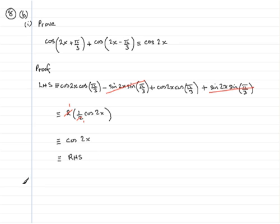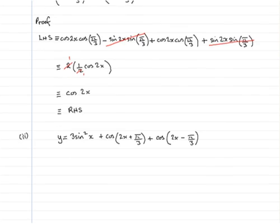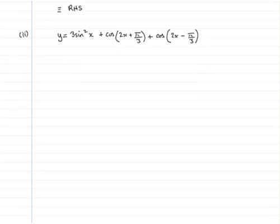OK, moving on to B part 2. We are given that y equals 3sin²x + cos(2x + π/3) + cos(2x - π/3). And we're asked to show that dy/dx equals sin(2x). And if we're able to show that dy/dx equals sin(2x), we get four marks. So how do we do it? Well, let's just give ourselves a bit of room here.